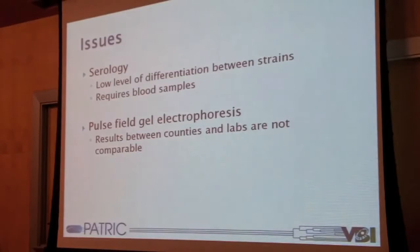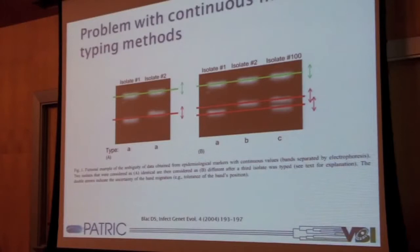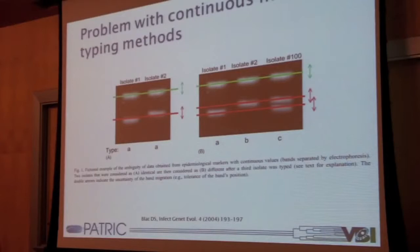Here's a quick slide detailing the kind of band migration that can occur with pulse gels when different lab protocols are used in different institutes, and the problem with using continuous markers for molecular typing methods. During some outbreaks, epidemiologists have to look at hundreds of these, so taking longer than 60 seconds to figure out whether you're looking at the same strain is already too long and can lead to mostly subjective results.